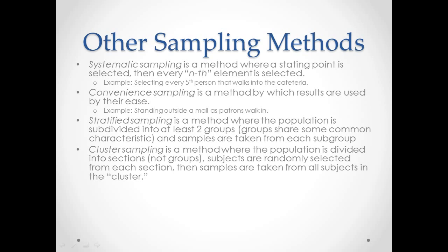Cluster sampling: the population is divided into sections, not necessarily groups. When you're talking about groups, groups typically have some sort of common characteristic like we talked about with stratified sampling. With cluster sampling, we're just dividing the population up into sections, and after we divide them up, we're going to take people from each section.